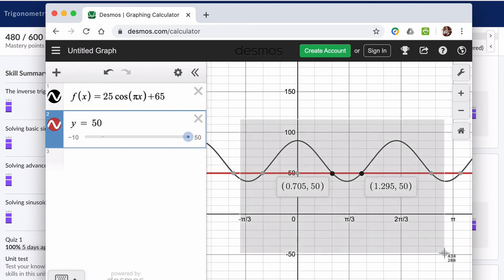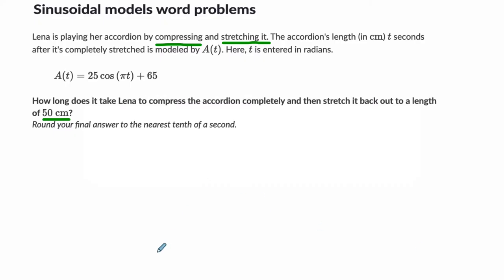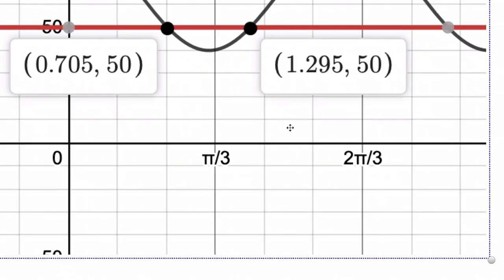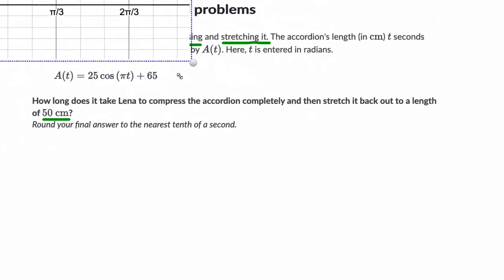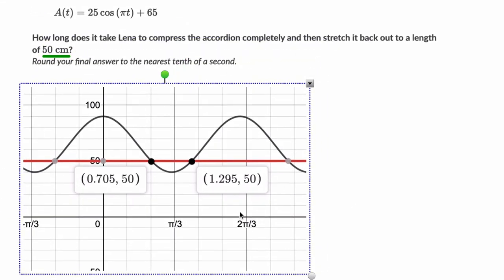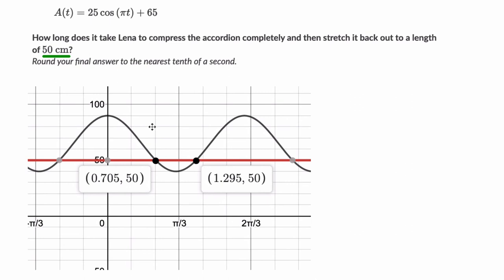Let's trim this photo down. And we are interested in finding this point, because it says, how long does it take to compress the accordion completely? So here it's opened, and then it compressed all the way down to here, and then back up to this point here where it's at 50 centimeters. We can do that algebraically. 50 equals 25 cosine of πt plus 65.